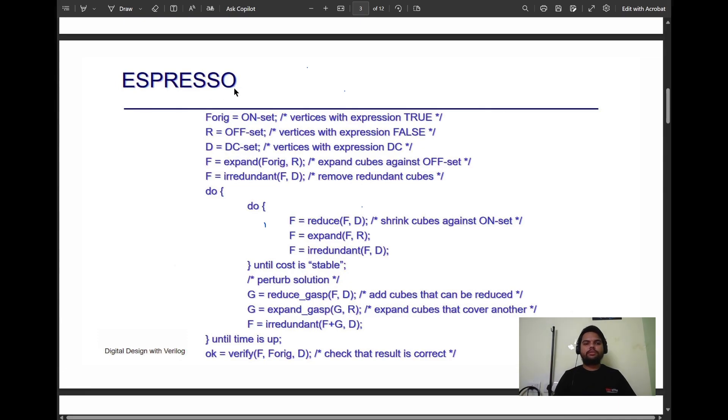Now I introduce the Espresso algorithm. In Espresso algorithm, we first initialize the onset value into the F original variable. Onset means the minterms having value 1. Then we initialize offset value into R variable and don't care set value into D variable. Then we start the operation called expand operation with the original expression and the offset value to expand Q against offset. Then we introduce irredundant operation in which we pass the resultant Boolean expression and the don't care set to remove redundant Q.